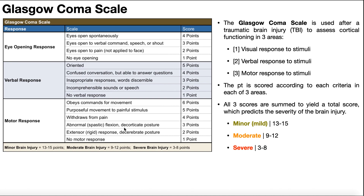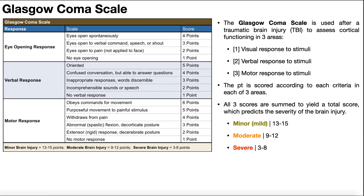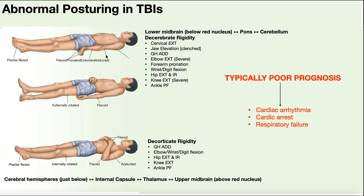Three and two points are for decorticate and decerebrate posturing. Decerebrate rigidity — shown at the top — results from damage at or below the level of the red nucleus in the midbrain, including the lower midbrain, pons, or cerebellum. Decerebrate is the worst prognosis of the two. Out of the two, you'd prefer decorticate, which also scores one point higher.